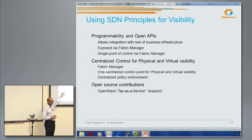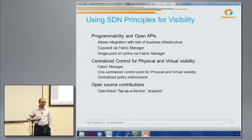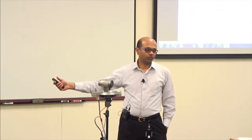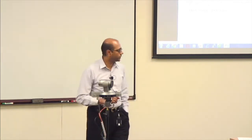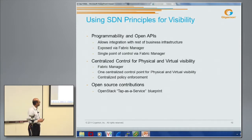Number two is centralized control for physical and virtual visibility — very important because you get a holistic view of physical plus virtual, which can be used for centralized policy enforcement. Number three is open source contributions. We are driving a project with many other vendors called tap-as-a-service within OpenStack. Rather than doing a custom hack within Open vSwitch that would only work in our environment, we want an open methodology so that once it is built into OpenStack, even if the customer changes the vSwitch, as long as it provides tap-as-a-service, it remains agnostic to the actual vSwitch.